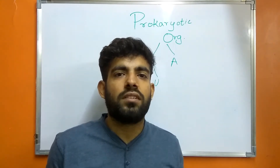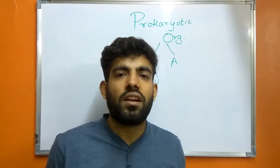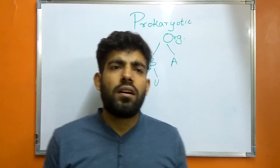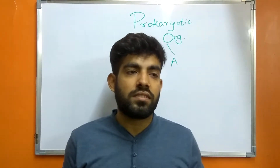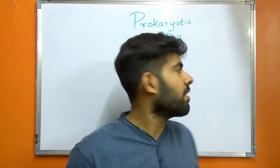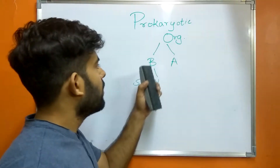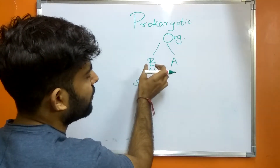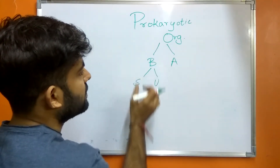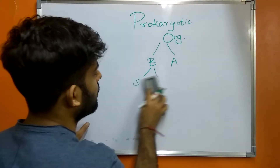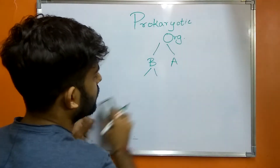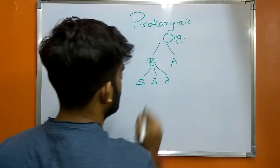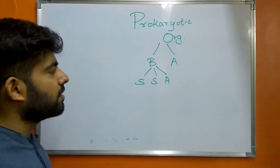One might think that bacteria almost have the same type of structure or similar morphology, but the major differences lie in their genetics and ecology. To characterize or differentiate between bacteria, I can simply go with the size, shape, and arrangement of the organism.